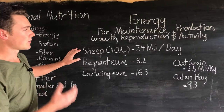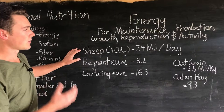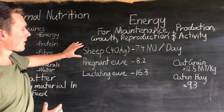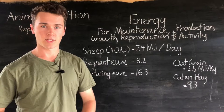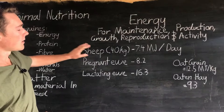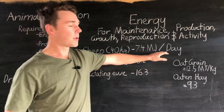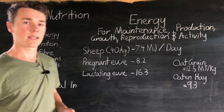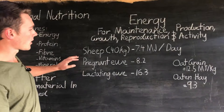Here are some examples of the energy requirements for a sheep, a pregnant ewe, and a lactating ewe. These energy requirements are all in metabolizable energy — we have a video on energy digestibility which explains that. Energy is measured in megajoules per day. A 40-kilo sheep in maintenance — not growing, just surviving and staying the same — requires 7.4 megajoules of energy per day.